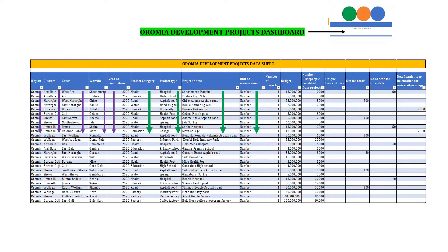Then you need the number of projects, then the budget spent on those projects, the number of people benefited from those projects — or potentially could benefit from those projects. Then as a description, a unique description for that project if any. And then for road projects, the kilometers of road — additional information specific to road. Then for hospitals, the number of beds. And for universities, the number of students enrolled in those universities or potentially could be. Once you insert this data, you will get the dashboard updated with a single click.